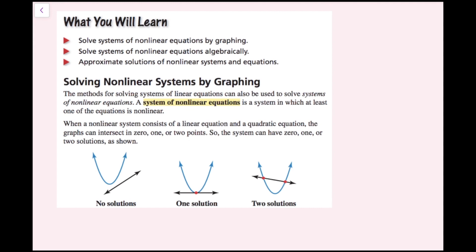The method for solving systems of linear equations can also be used to solve systems of non-linear equations. A system of non-linear equations is a system in which at least one of the equations is non-linear. When a non-linear system consists of a linear equation and a quadratic equation, the graphs can intersect in zero, one, or two points, so the system can have zero, one, or two solutions.